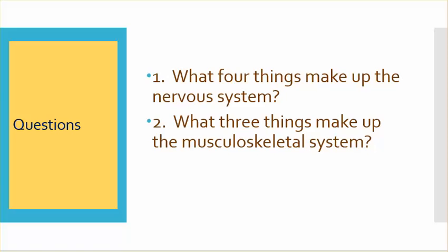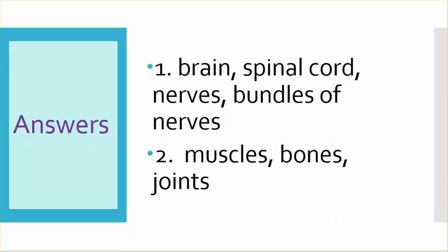Number one: what four things make up the nervous system? Number two: what three things make up the musculoskeletal system? Answers — number one: brain, spinal cord, nerves, bundles of nerves. Number two: muscles, bones, joints.